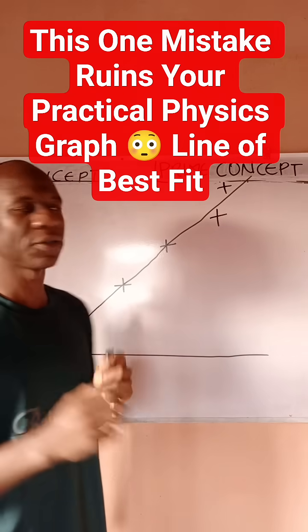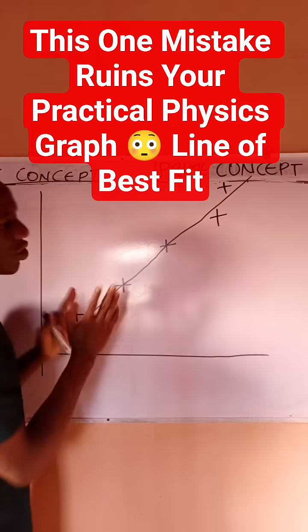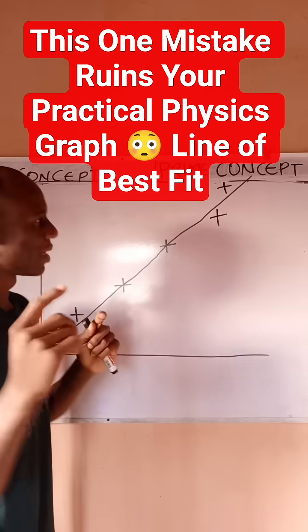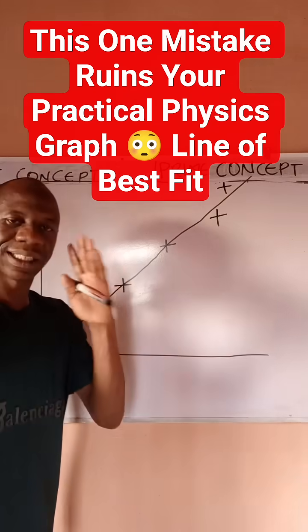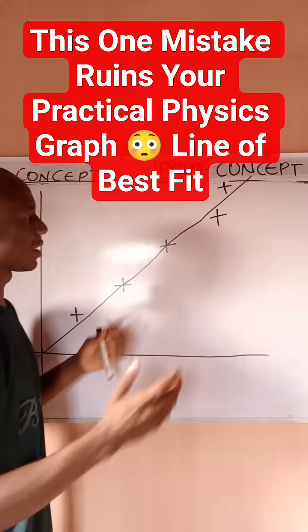for this to be your line of best fit, the unaccommodated points should be evenly distributed. Someone may ask, what if I have two points below and one above? Is this still correct? Yes, it's an even distribution.